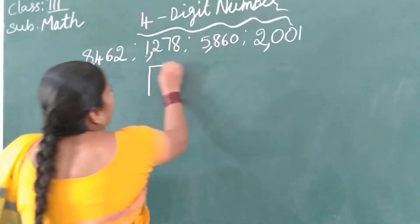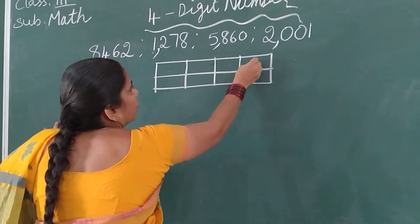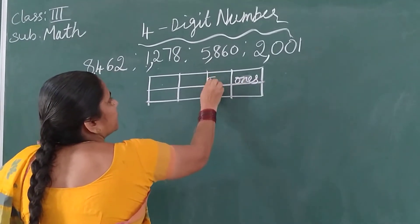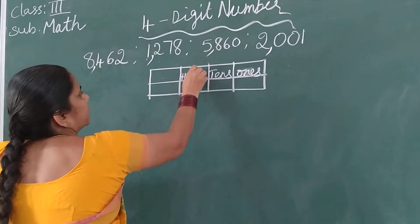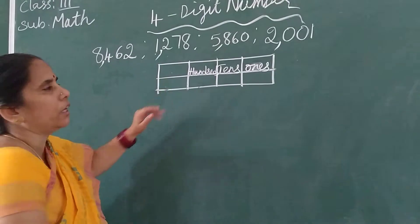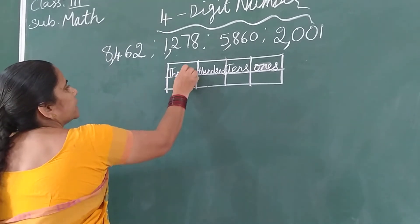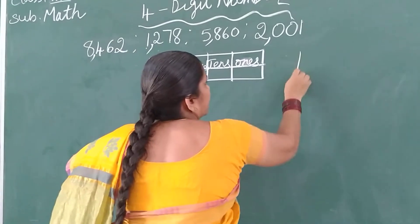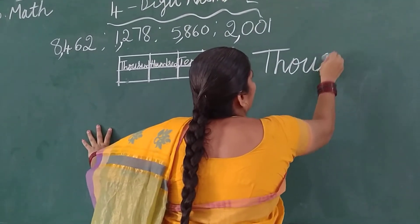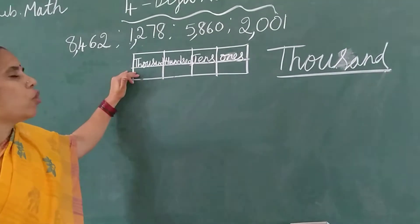Here I will draw the place value chart. Already you all know the first place is 1s, the second place is 10s, and the third place is 100s — we already learned up to here. Now, the new place for you is 1000. The spelling of 1000 is T-H-O-U-S-A-N-D. I will write it here. This is the new word and the 4th place.